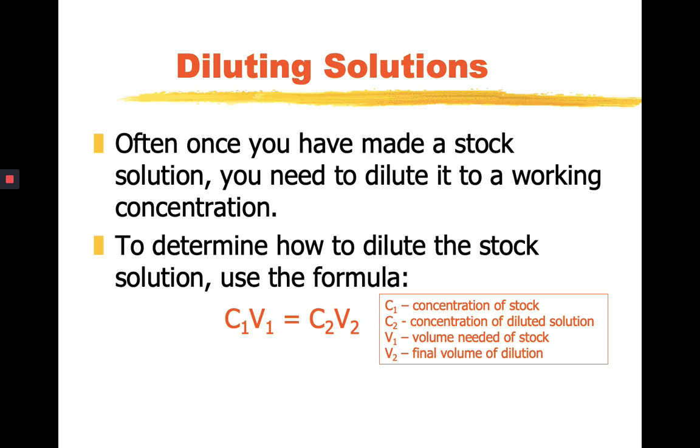For example, we want a lesser concentration. 0.10 molars of sulfuric acid will do in this experiment or will give us the desired effect already. So to determine how to dilute this stock solution, we can use the formula C1V1 is equal to C2V2.